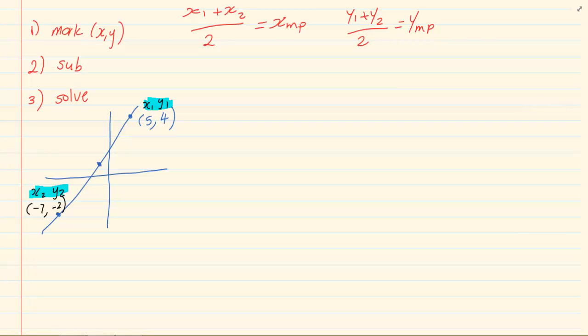Now we simply substitute. So I would have -7 + 5 divided by 2 equals x of my midpoint. Which means if I had to solve this equation, I would have -2 over 2. The x of my midpoint is equal to -1.